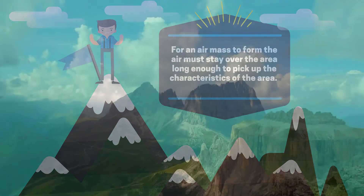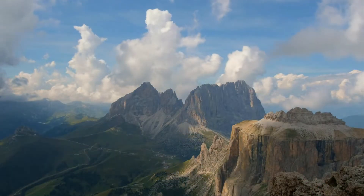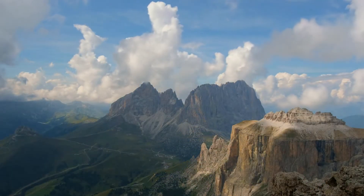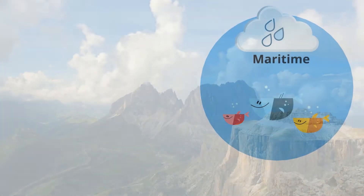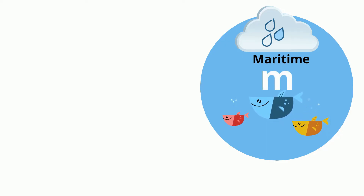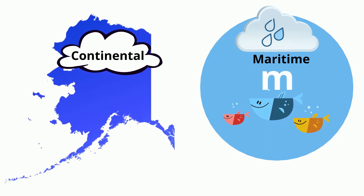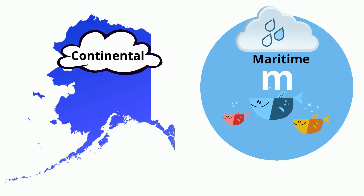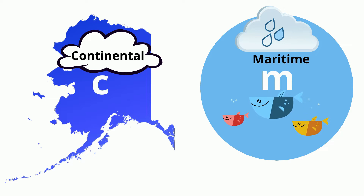Airmasses are named after where they are formed. A maritime airmass forms over water; they are moist and are represented with a lowercase m. A continental airmass forms over land; they are dry and are represented with a lowercase c.